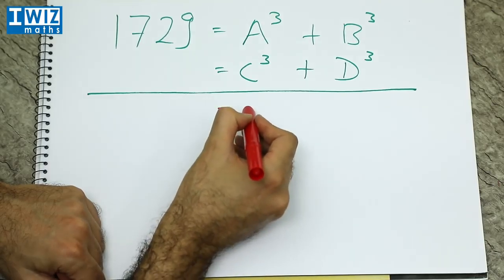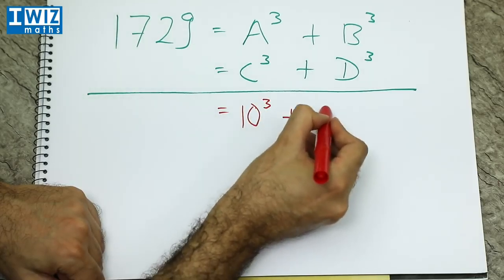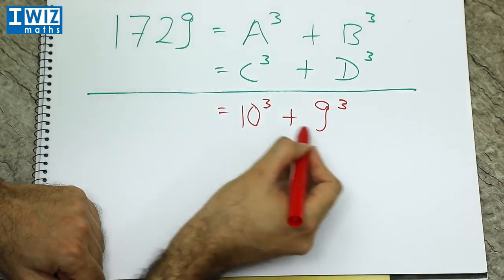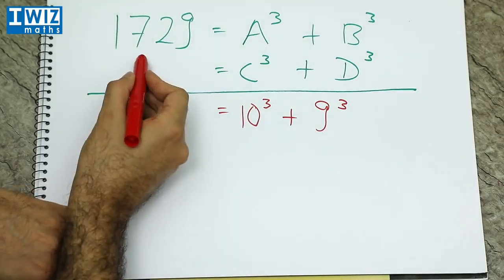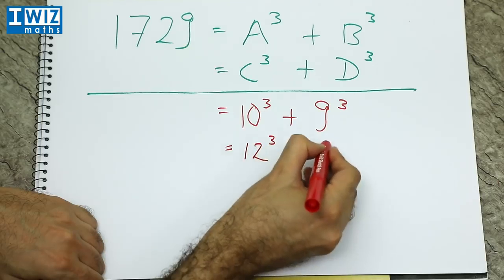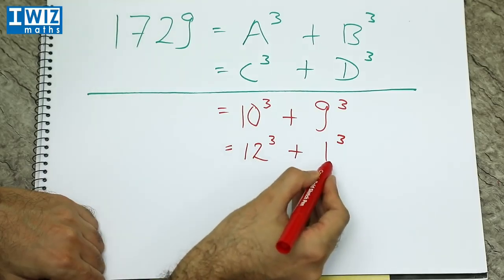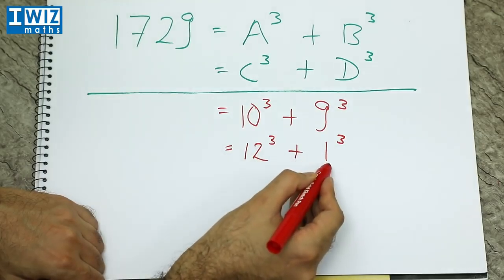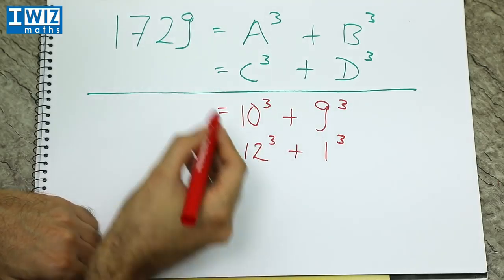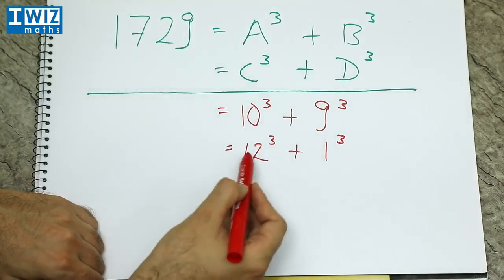So the answer is 1729 can be written as 10 cubed plus 9 cubed. 10 cubed is 1,000. 9 cubed is 729. So you add the two together, you get 1729. It can also be written as 12 cubed plus 1 cubed. So 12 cubed is 1728 plus 1. So 1 cubed is just 1. So 1728 plus 1 gives us 1729. So 1729 can be written as the sum of two cubes in two different ways.